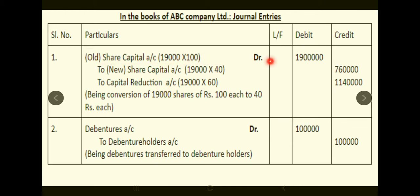Old Share Capital Account is debited with 19,000 × Rs.100 (the balance sheet figure). New Share Capital is credited with 19,000 × Rs.40 (the adjusted value). The difference — Rs.100 minus Rs.40 equals Rs.60 — is the benefit received, so Rs.60 per share is transferred to Capital Reduction Account, giving 19,000 × Rs.60.